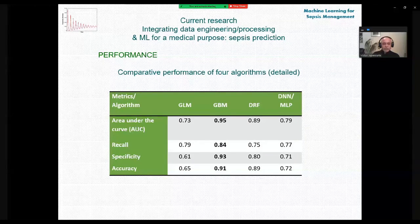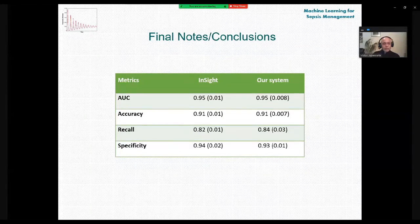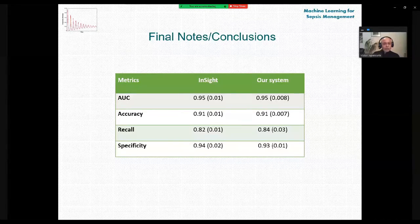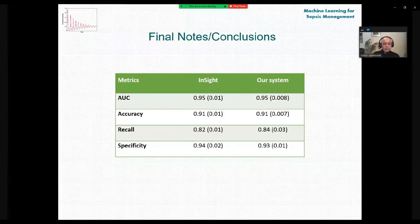In the detailed performance metrics table, GBM is the best. From the beginning we replicated the InSight system in R language — originally built in Python — and used it as a benchmark while researching our own system. Our performance is quite similar, except recall is 2% higher and specificity is 2% lower in our system.